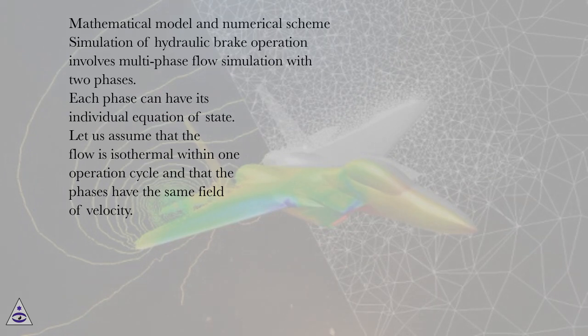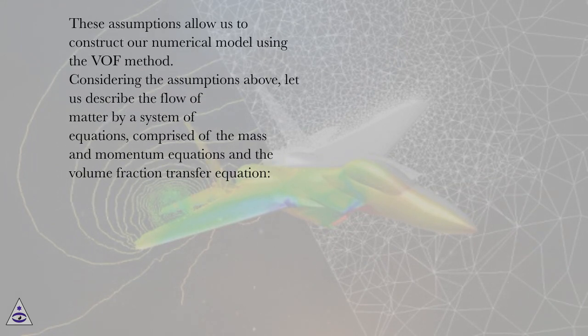Let us assume that the flow is isothermal within one operation cycle and that the phases have the same field of velocity. These assumptions allow us to construct our numerical model using the VOF method. Considering the assumptions above, let us describe the flow of matter by a system of equations, comprised of the mass and momentum equations and the volume fraction transfer equation.